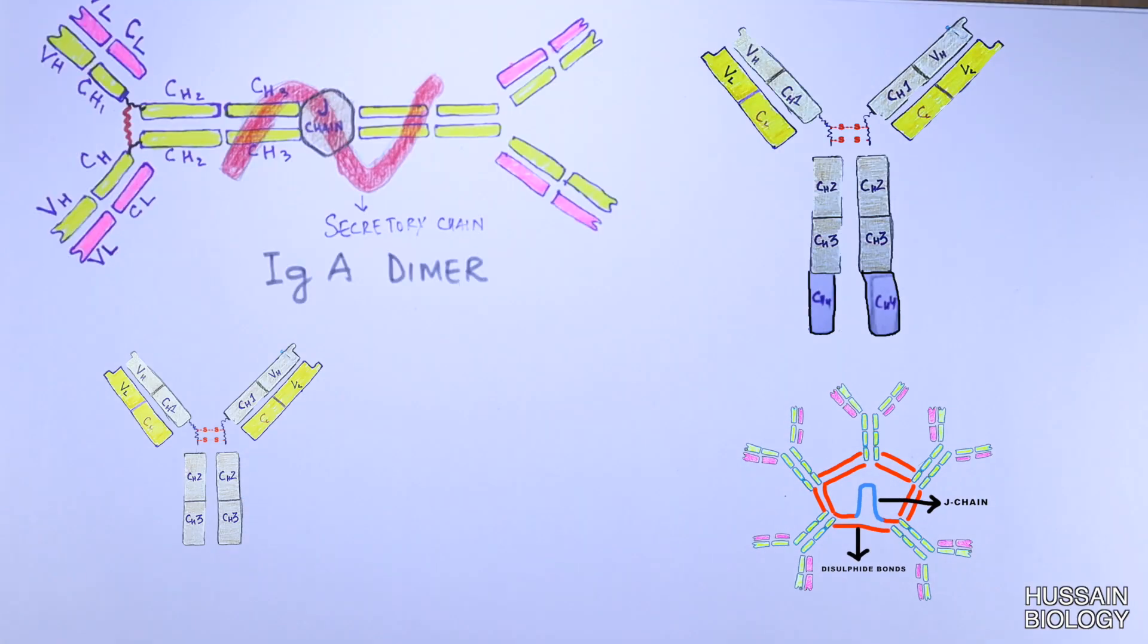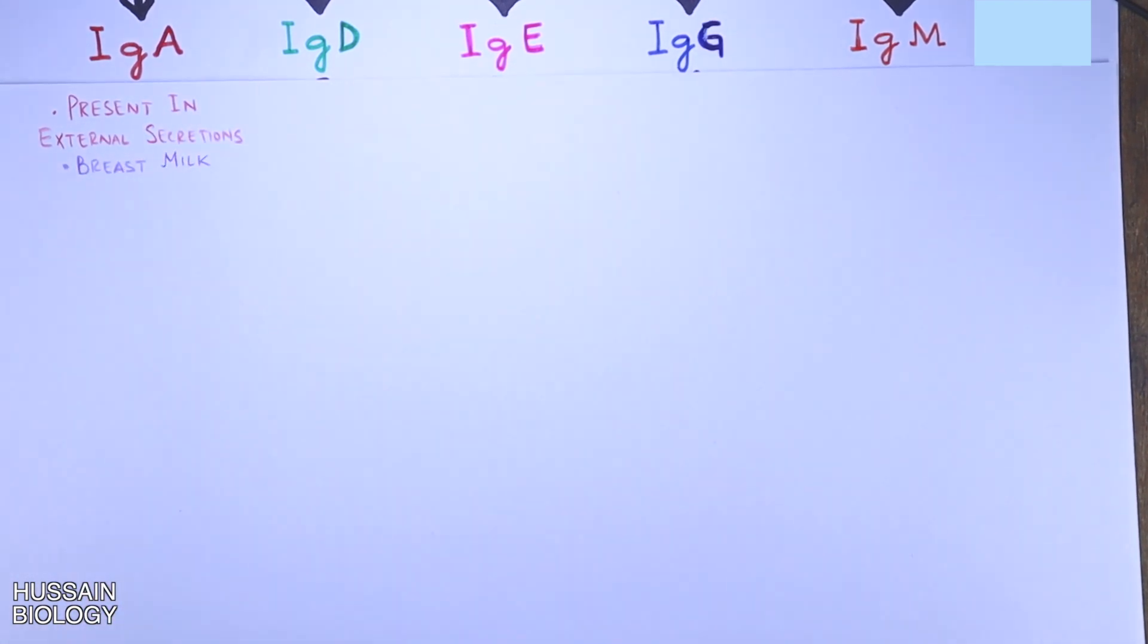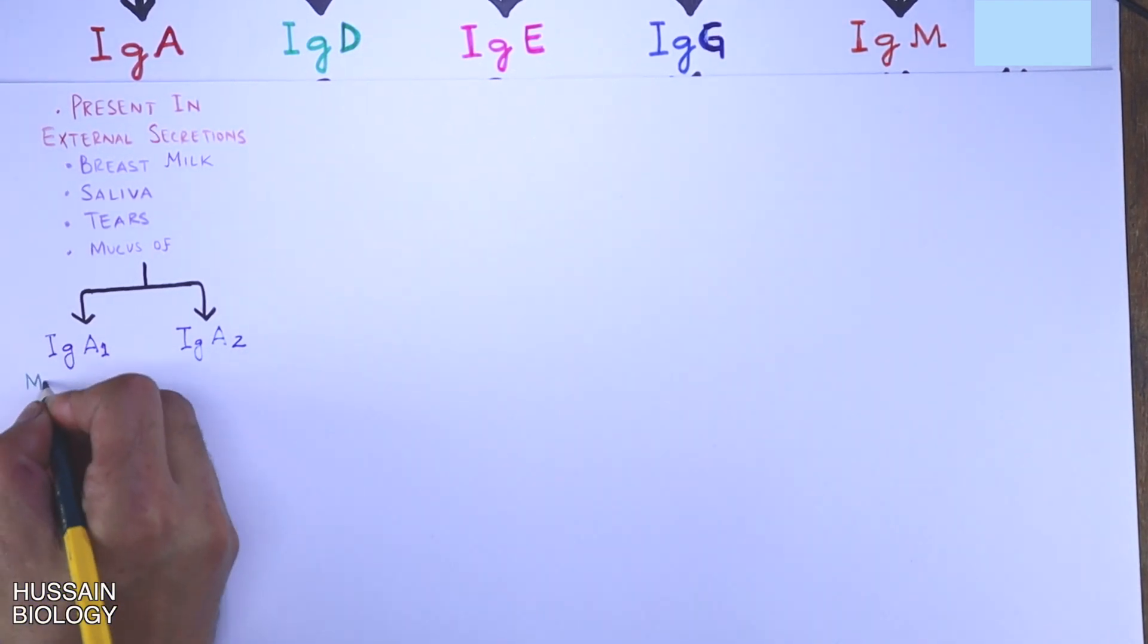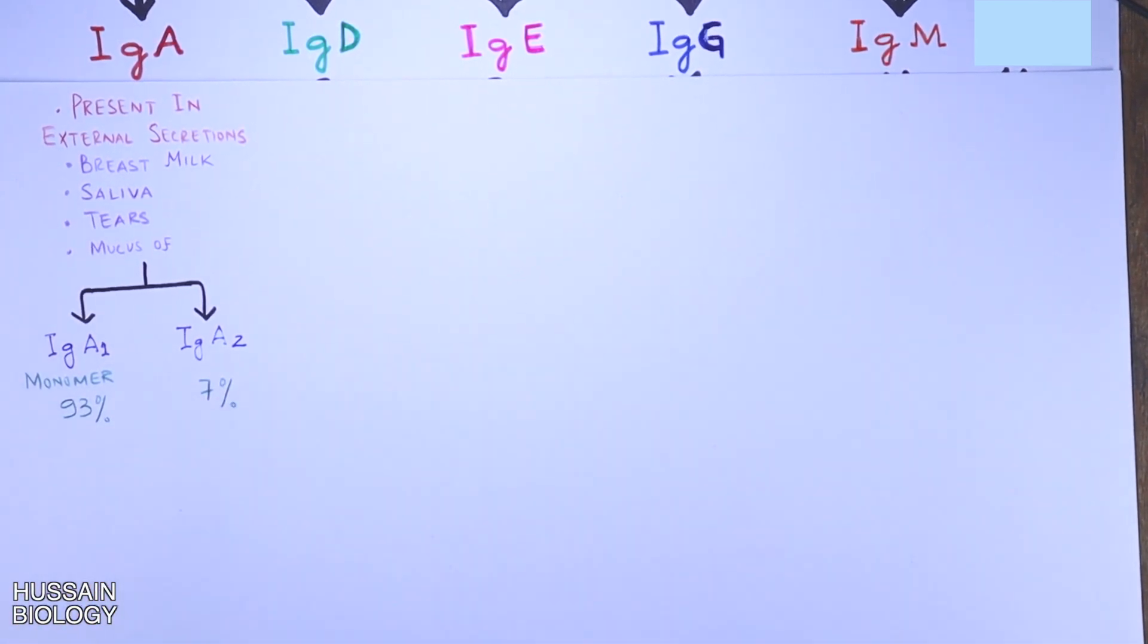So these are the basic immunoglobulin structures shown in the diagrams. Now let's see some information regarding the immunoglobulins. The IgA is present in external secretions like breast milk, saliva, tears, and mucus of gastrointestinal tract, respiratory epithelium, and many more. The IgA occurs in two forms: IgA1 and IgA2. The IgA is present in monomeric form.